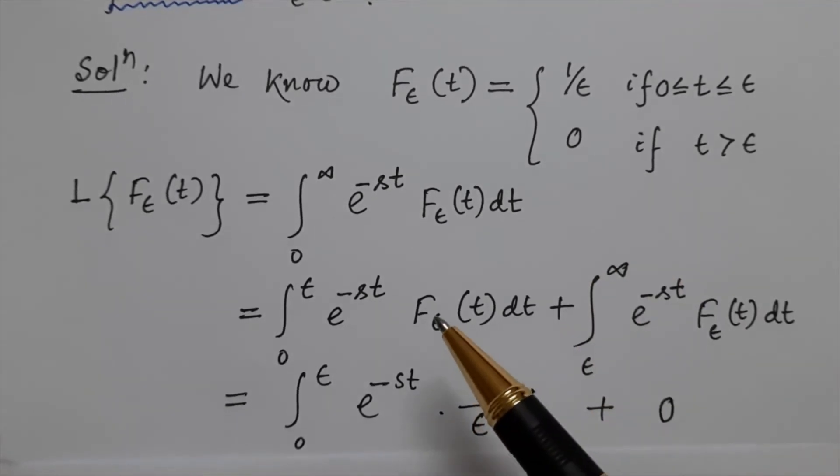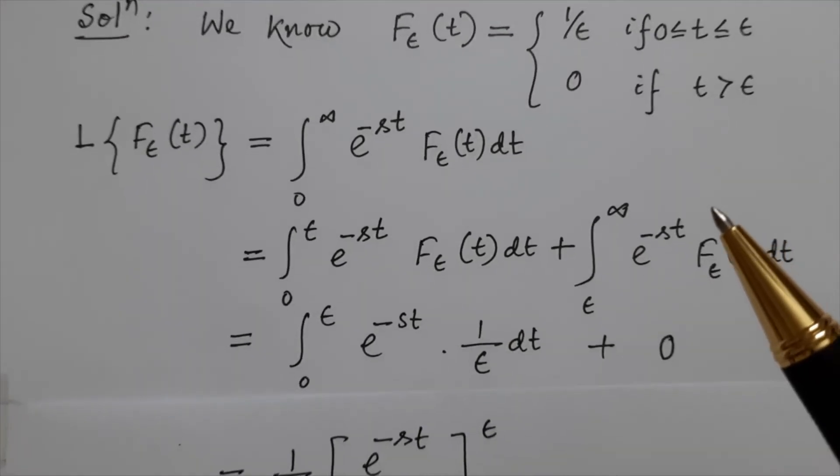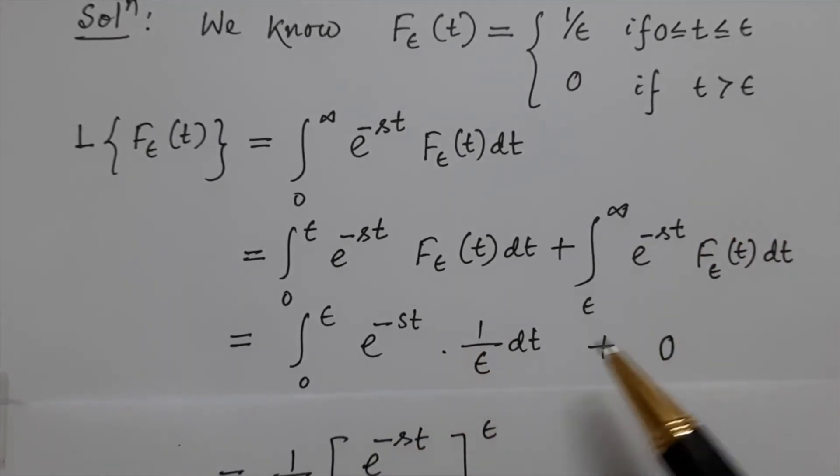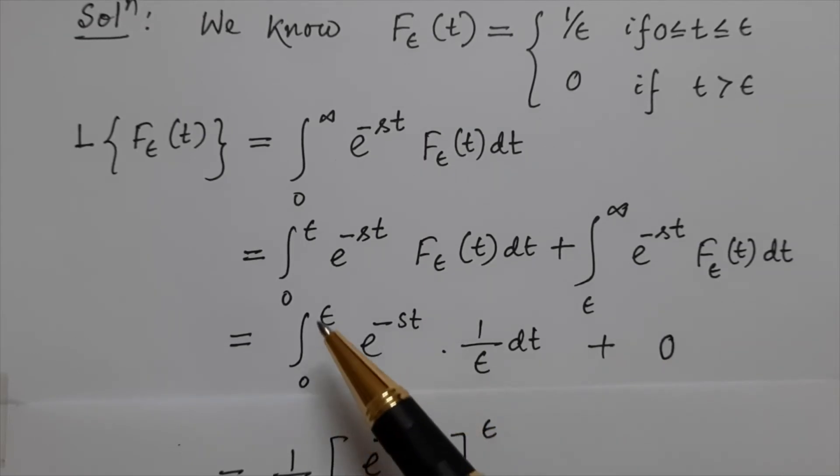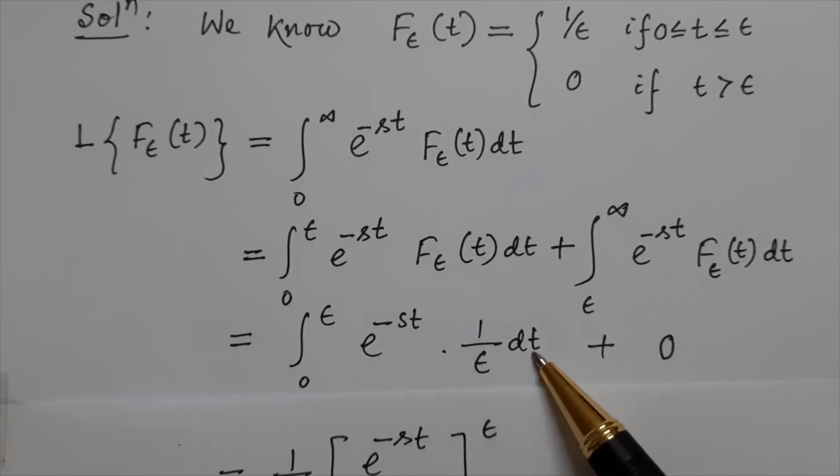Now let us put these two values. The second part is 0, and in the first part it is integration 0 to ε, e^(-st) · 1/ε dt.